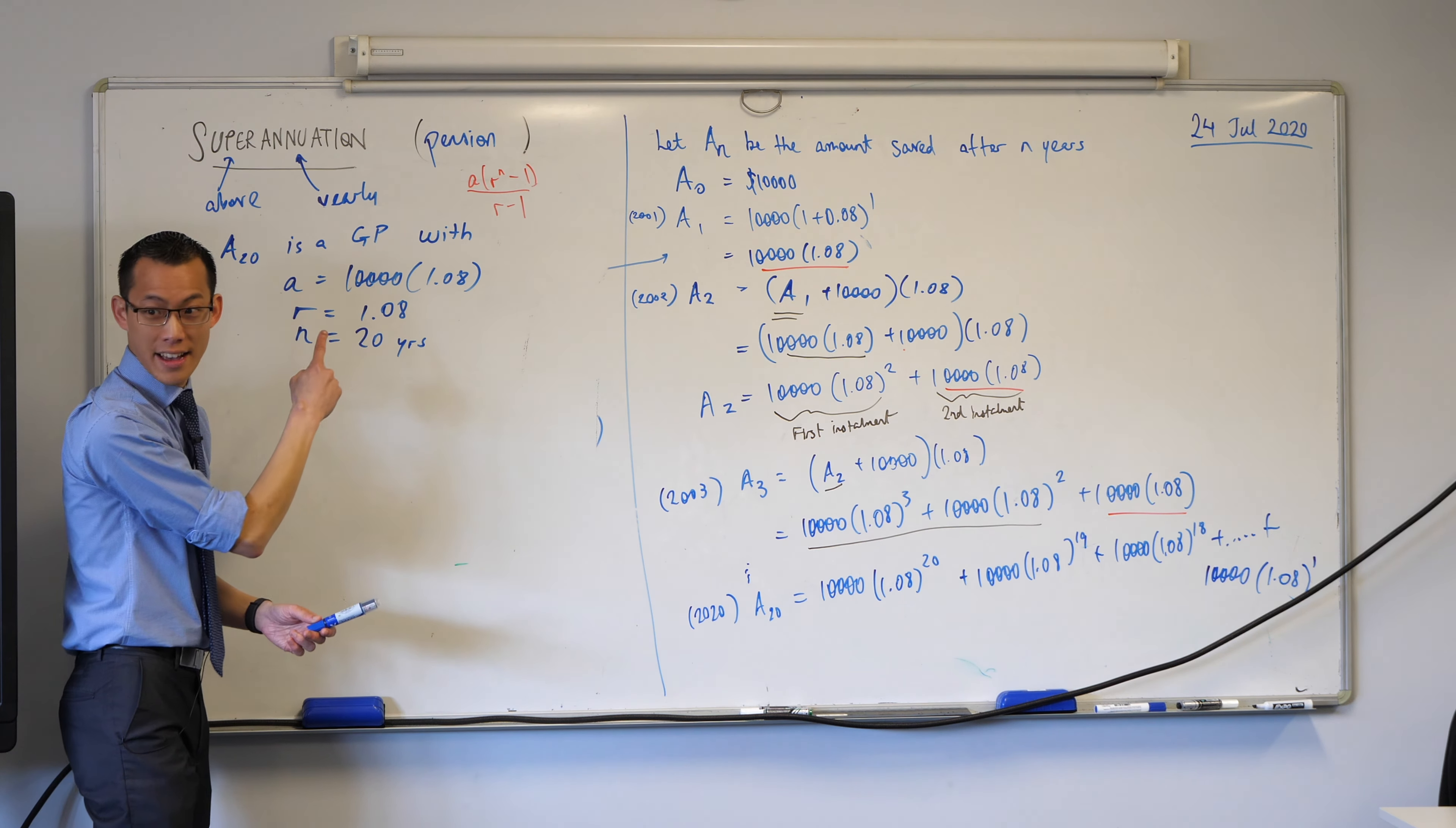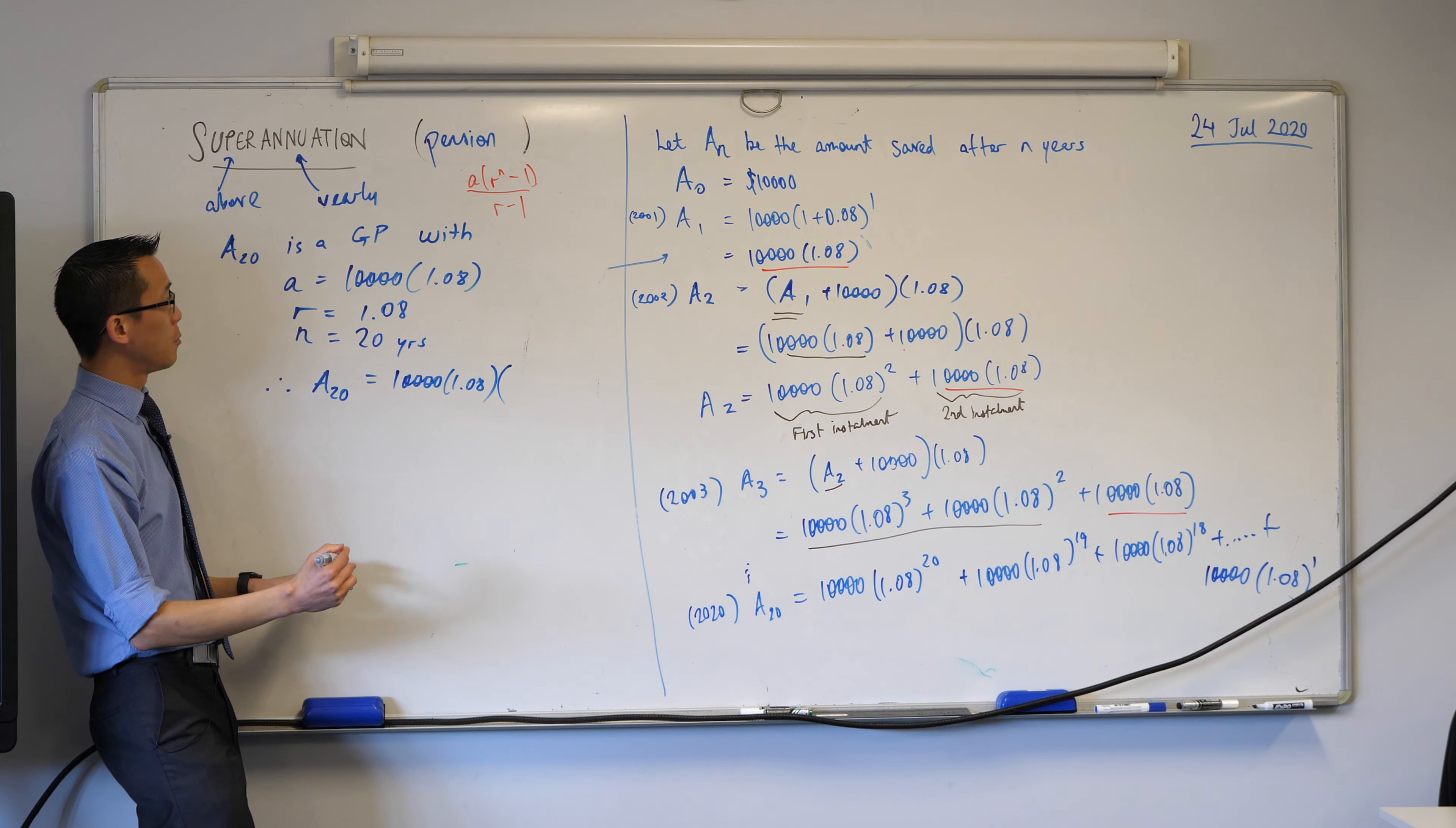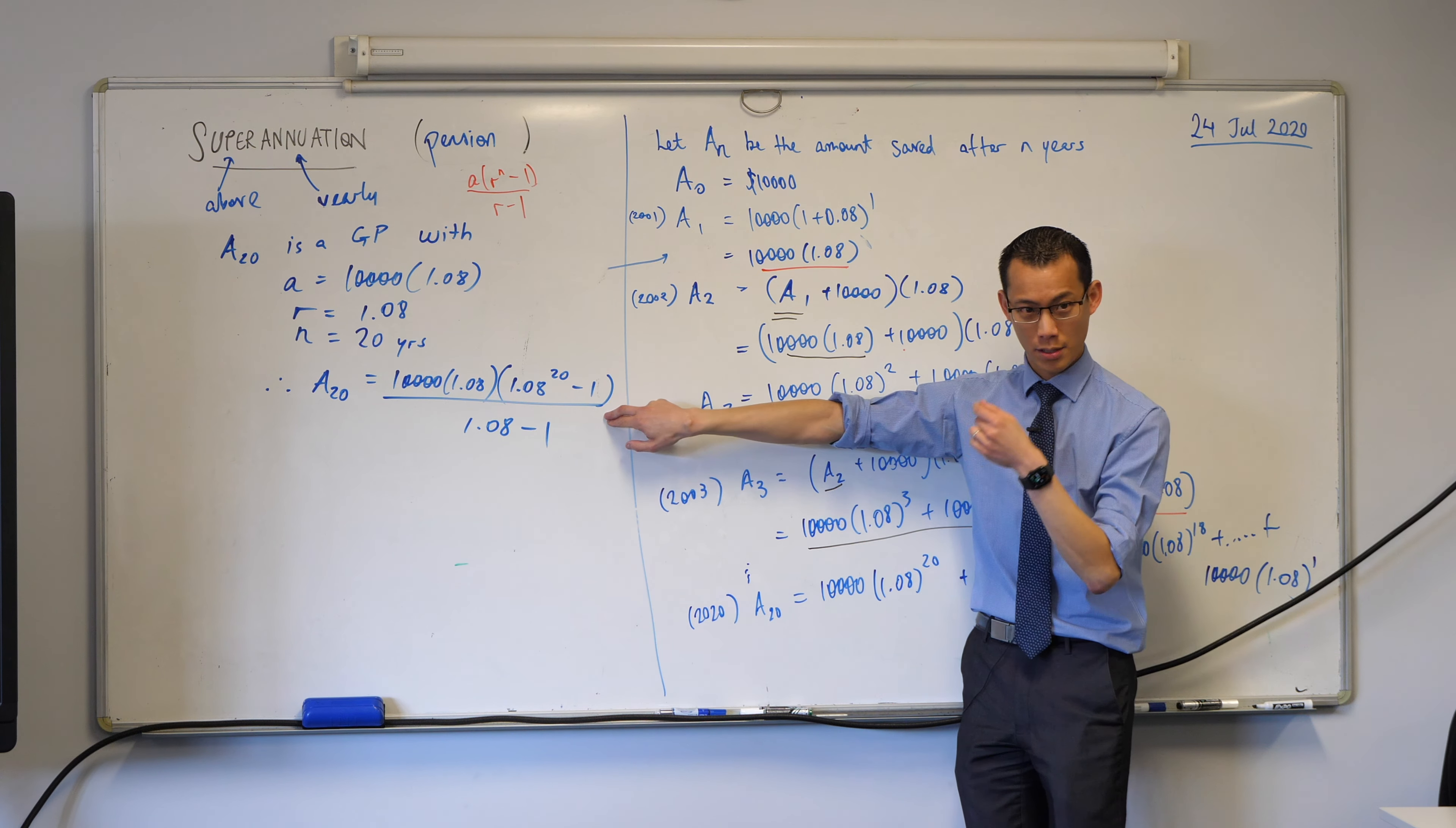All right. I've got my A, my R, and my N. So I can say, therefore, A20 equals, and I'm going to go for my sum of a GP formula. We'll jot it down, and then if you haven't already got your calculator out, please reach for it, and let's evaluate it. What have I got here? Here's A. Here comes R to the N minus 1. There's R minus 1. So let me pause there. It is weird, but isn't it so much better than trying to do this?